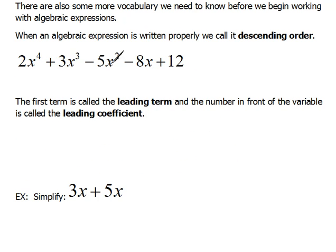When an algebraic expression is written properly we call it descending order. This means our highest power of x comes first and then it goes down in order until there are no more variables.